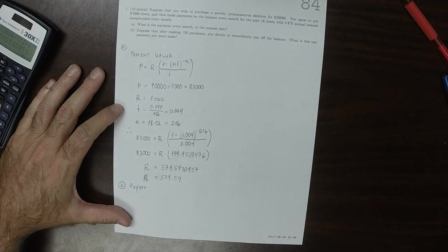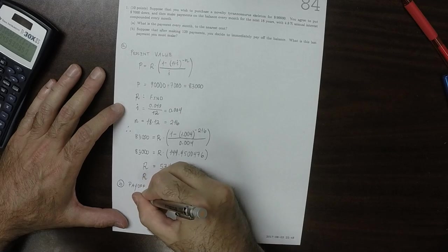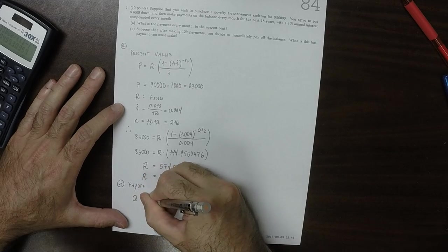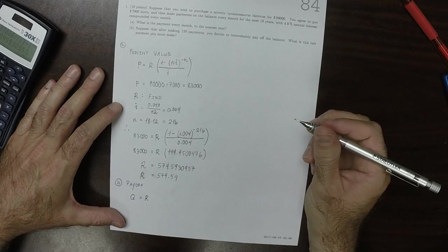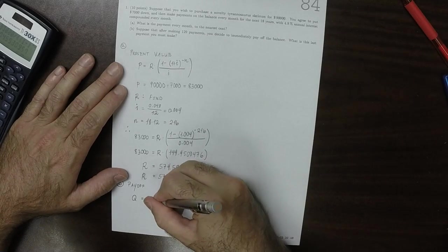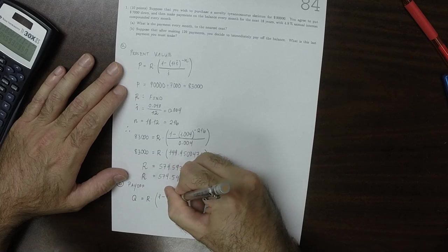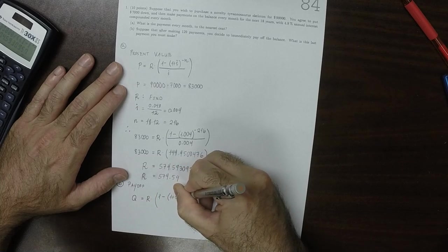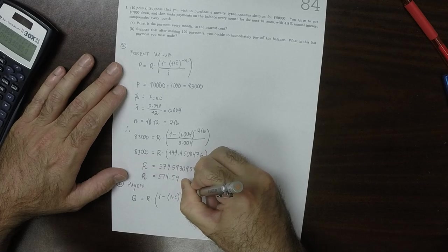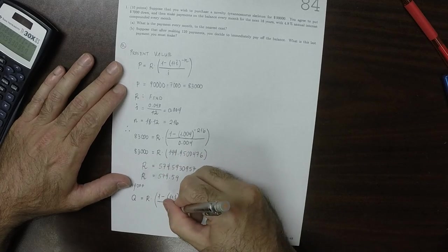The payoff formula is that Q is equal to R multiplied by 1 minus 1 plus I to exponent N minus X, and then divide by I.